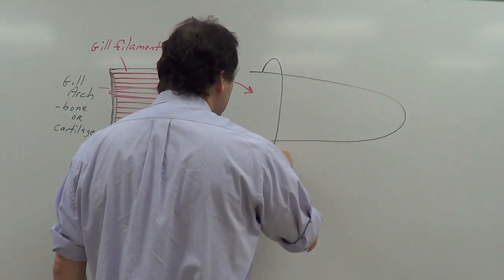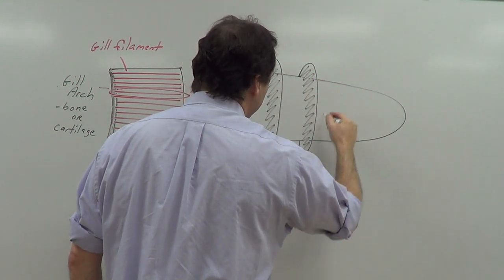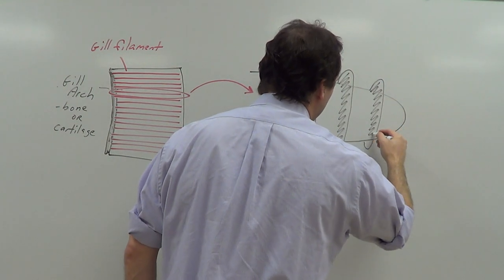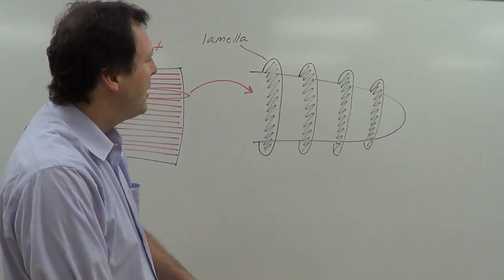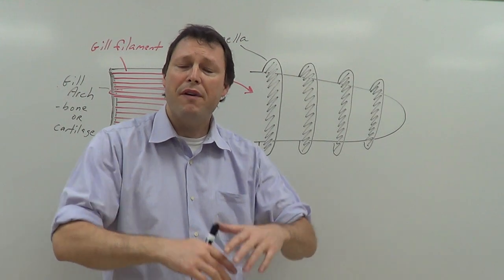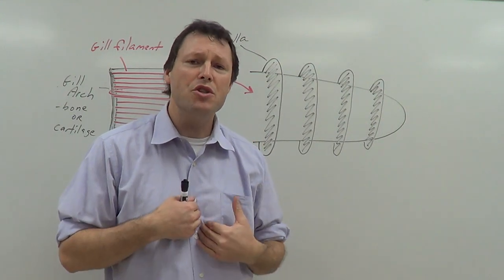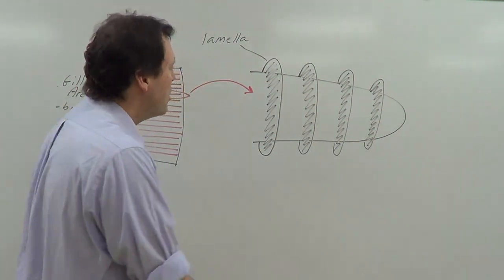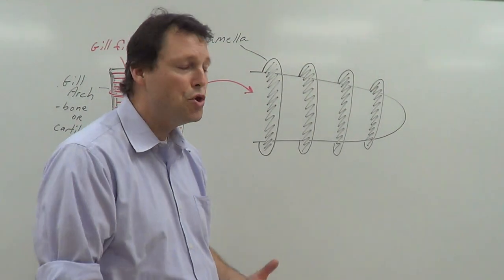I'm going to draw some flaps of skin on my gill filament — let's draw a couple flaps of skin. These flaps of skin have a name: they're called lamella. These lamella — these flaps of skin — are going to serve to increase surface area. Because any time gas exchange takes place, any time diffusion takes place, whether that happens in a gill, in your lung, or in your intestinal tract, it's all about surface area. Nature is going to find a way to maximize surface area, so by adding these lamella we increase the surface area of this gill filament, and therefore more diffusion can take place.